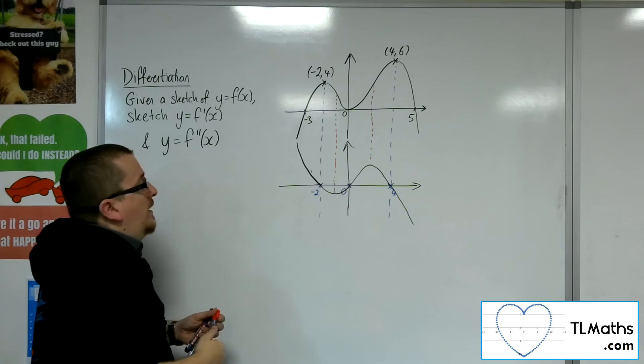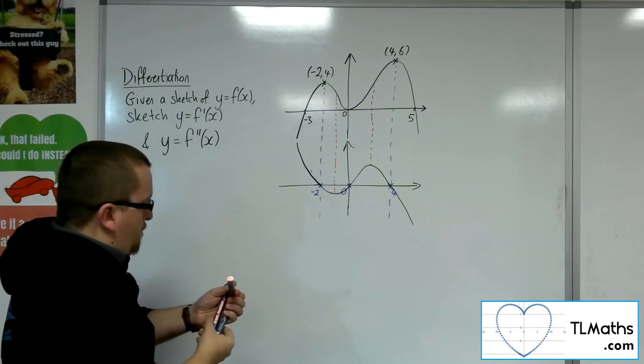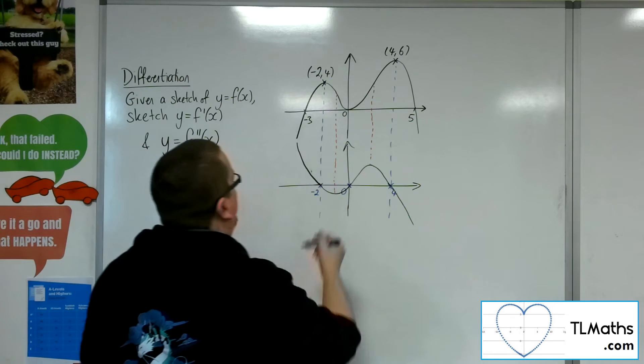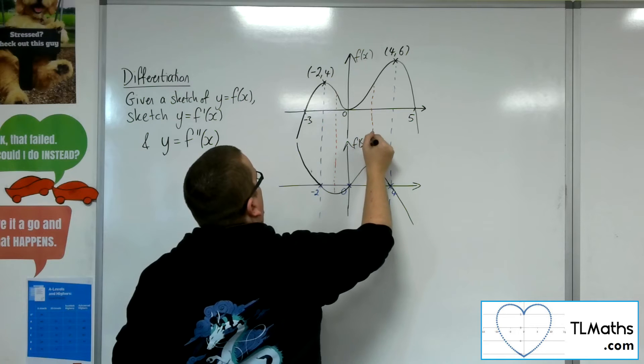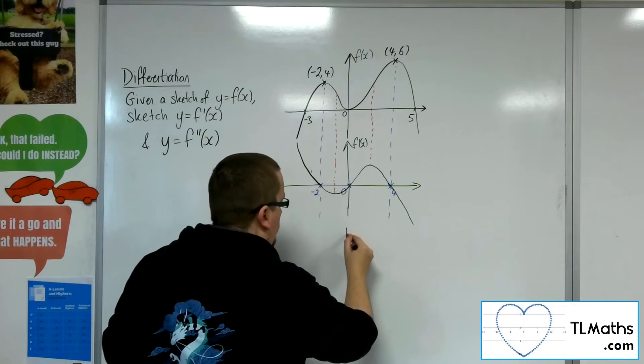So let's keep going. So if that's f of x, then this is f prime of x. Let's keep going, let's do another one. So we're now on to the second derivative.